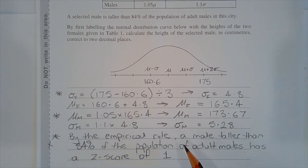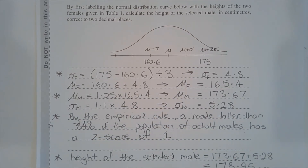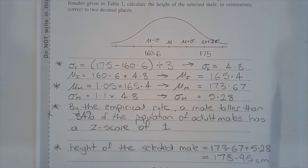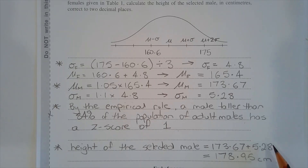By the empirical rule, a male taller than 84% of the population of adult males has a z-score of positive 1. Therefore, the height of the selected male is the mean of the male population plus 1 standard deviation, which equals 178.95 centimetres.